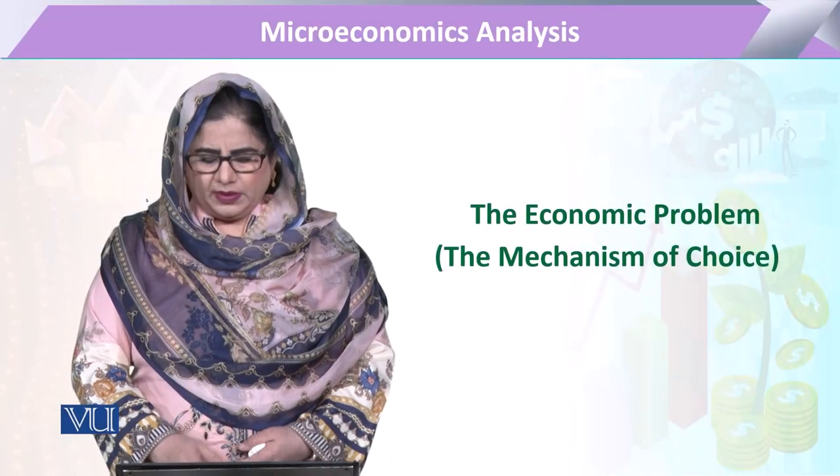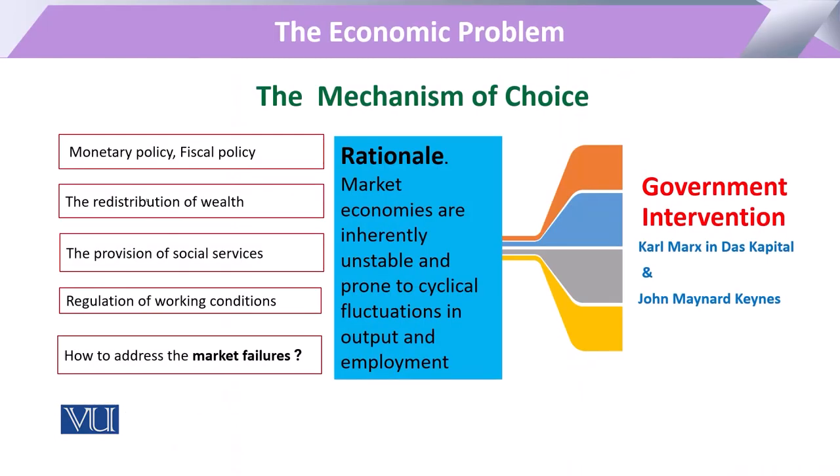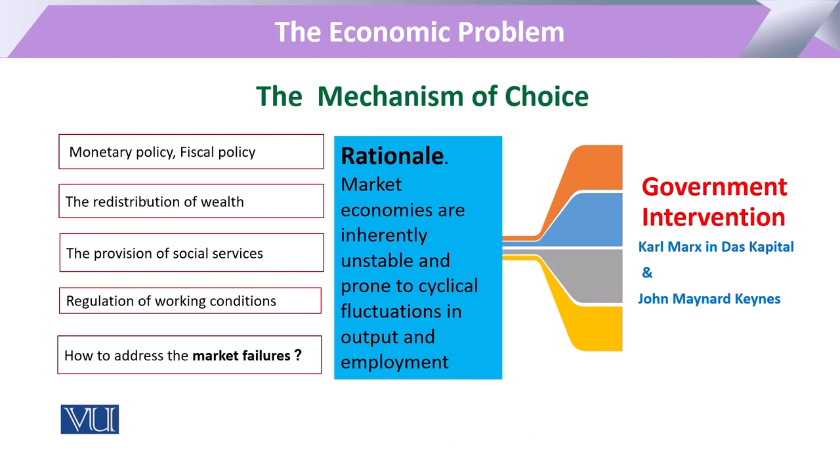Now I am going to explain the second mechanism of choice. The rationale behind this second mechanism is that when we work under market forces, there can be accumulation of wealth and accumulation of power in certain market agents. Under that accumulation of power and force and wealth, there can be an imbalance in the economy.